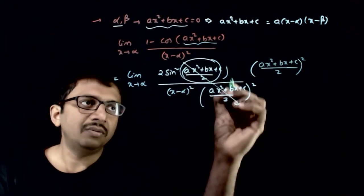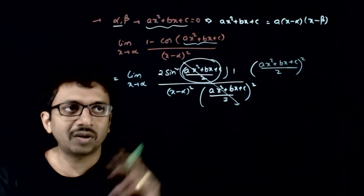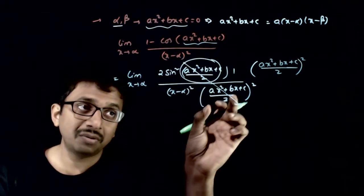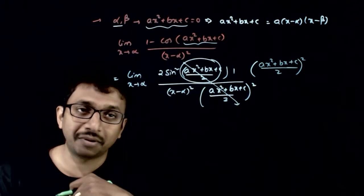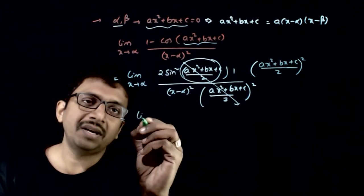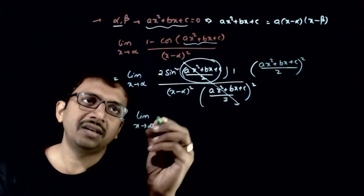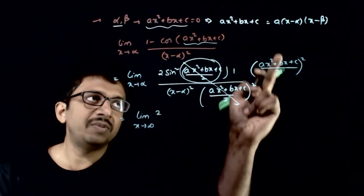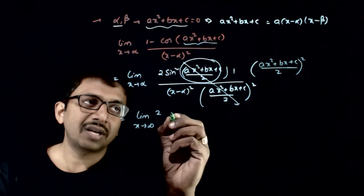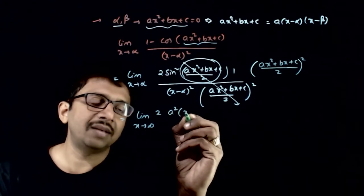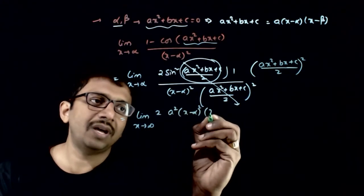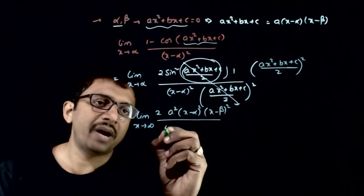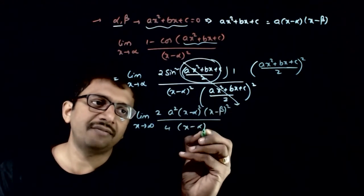This becomes equal to 1 because sin of (ax² + bx + c) / 2 over that same term tends to 1 as it tends to 0 — they all cancel. Now, ax² + bx + c can be written as a(x − α)(x − β), so this becomes a² times (x − alpha)² times (x − beta)² divided by 4 times (x − alpha)².